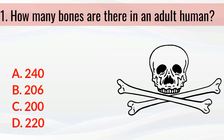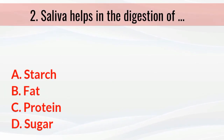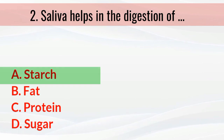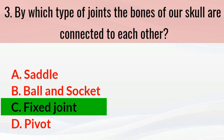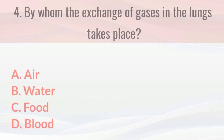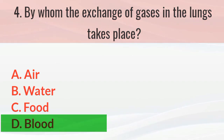How many bones are there in an adult human? The answer is 206. Saliva helps in the digestion of starch. By which type of joint are the bones of our skull connected to each other? The answer is fixed joint. By whom does the exchange of gases in the lungs take place? The answer is blood.